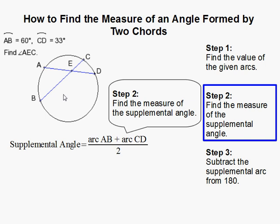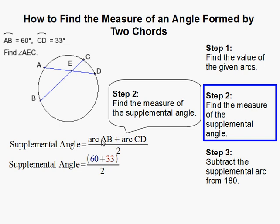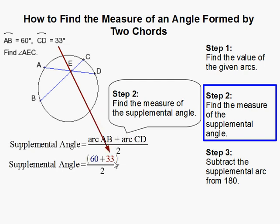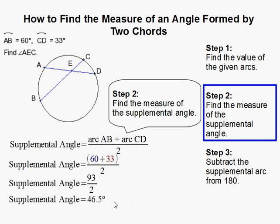To find this angle, we calculate arc AB plus arc CD, divided by 2. Substituting 60 for AB and 33 for CD, that gives us 93 over 2, which comes out to 46.5 degrees. So this angle here is 46.5 degrees.